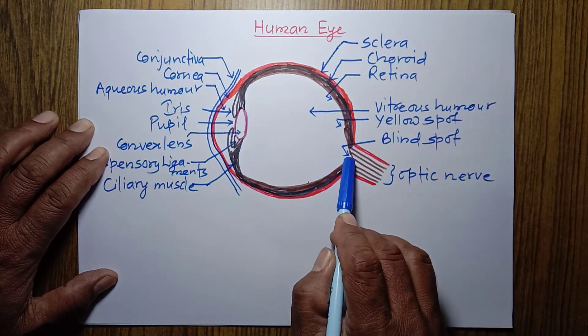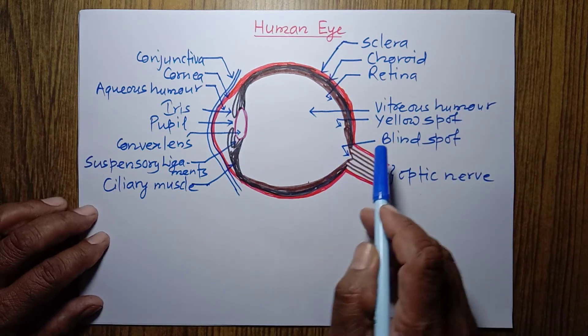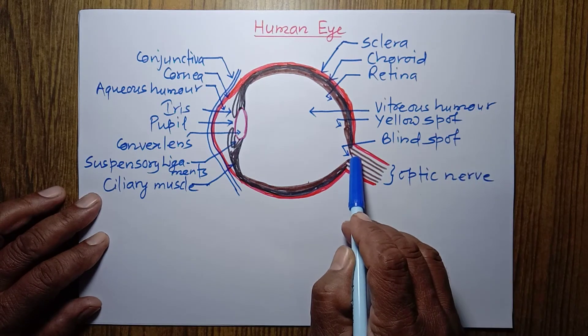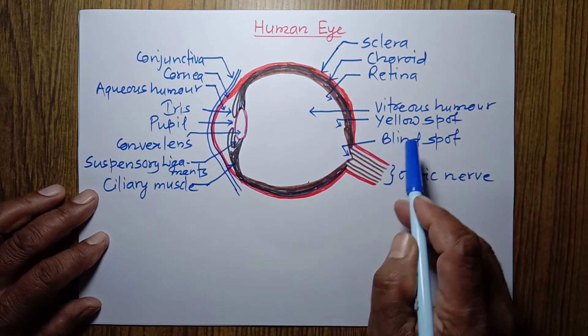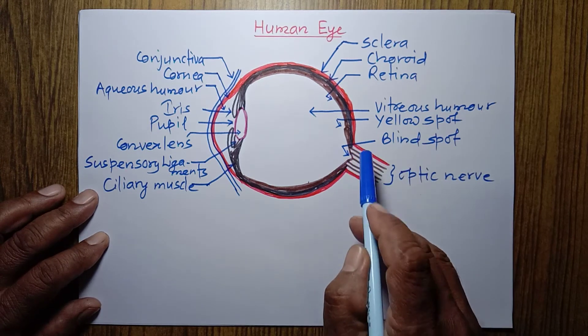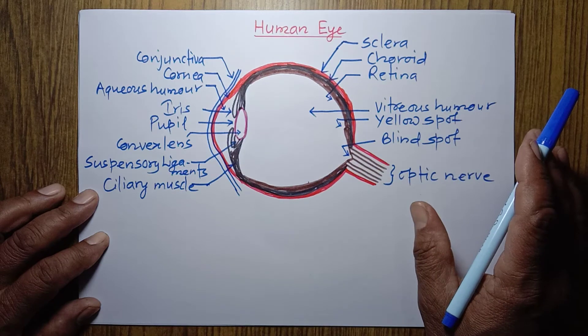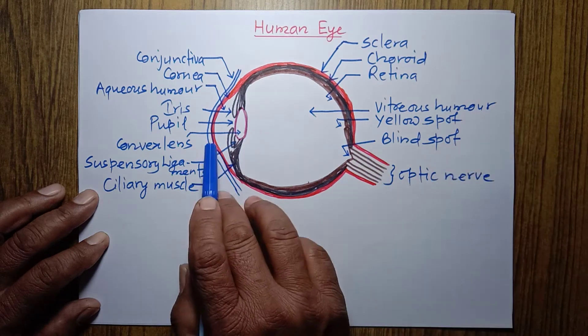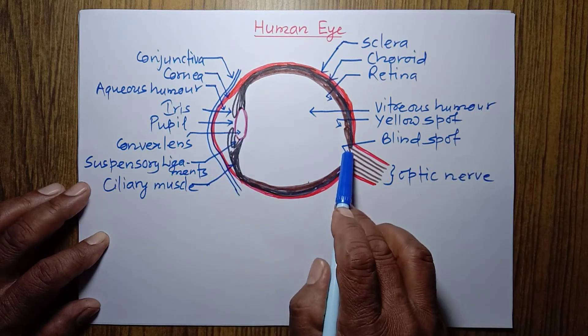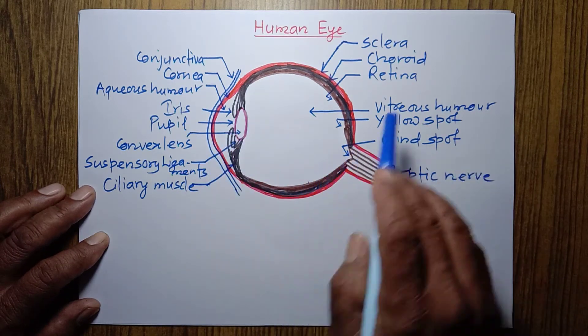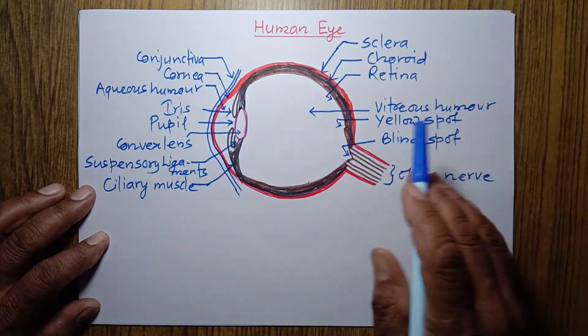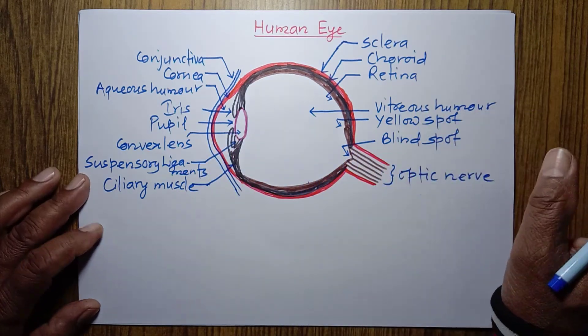There is another point also — blind spot. The blind spot is the region in which there are no sensory cells, and that's why if an image falls on the blind spot, we will not be able to see that object clearly.